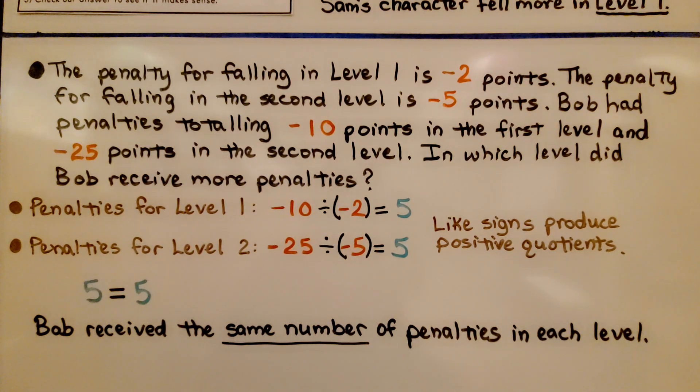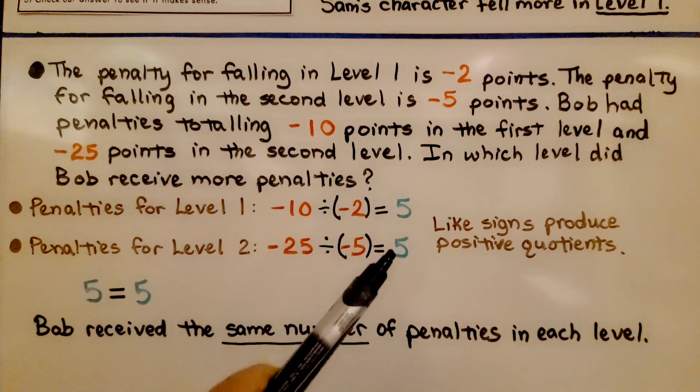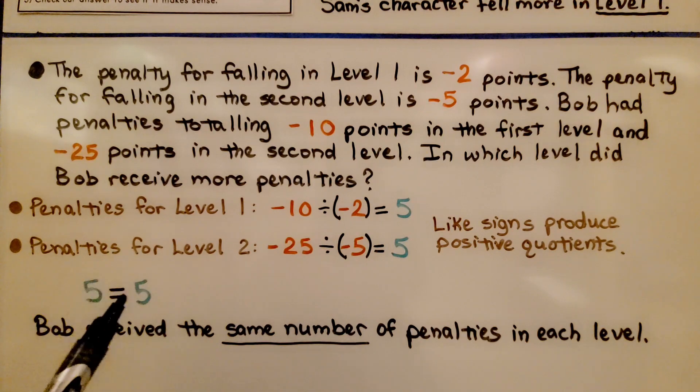So, in which level did Bob receive more penalties? Neither. Bob received the same number of penalties in each level. 5 is equal to 5.